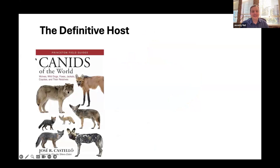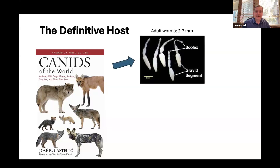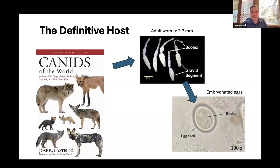The definitive host is a canid — the dog family, but it doesn't have to be a dog. Wild dogs, wolves, jackals, coyotes, foxes, et cetera, throughout the world. It has to be a canid, but it can be any of them. Many of them are wild, so you can see how it's quite possible to have this life cycle completed entirely in the wild. The adult worms produce embryonated eggs containing an oncosphere, which after a bit of development becomes infectious.